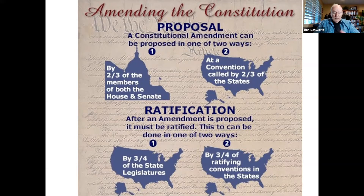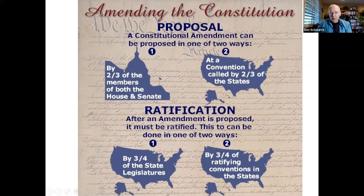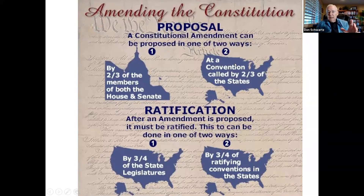The Constitution can be amended one of two ways: by a two-thirds vote in both the House and the Senate, or at a convention called by two-thirds of the states. The second method has never happened — there has never been a convention called for amending the Constitution. All amendments have been proposed by two-thirds of the House and two-thirds of the Senate.